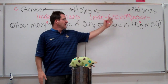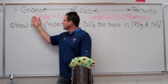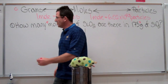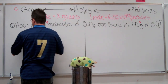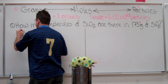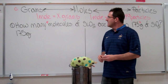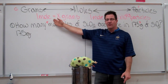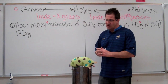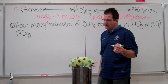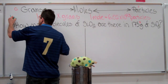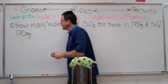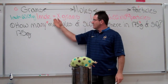We've already written down our conversion factors. Here's our conversion factor for going from moles to particles, and here's our conversion factor for going from grams to moles. We've been given 175 grams of SiO₂. In a previous video I showed you how to calculate molar masses. In this case, we're using silicon dioxide, and we know that one mole is equal to about 60 grams of silicon dioxide — that is the molar mass of silicon dioxide, and that's our conversion factor.